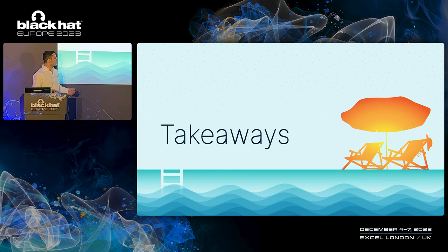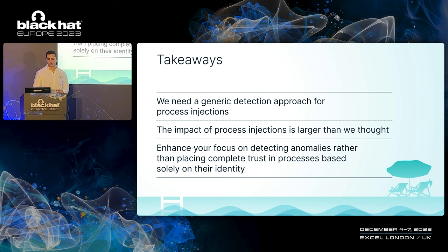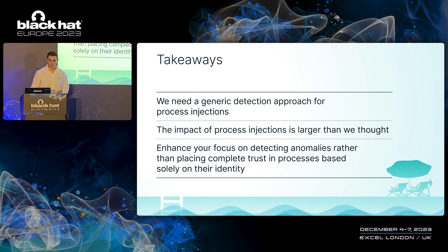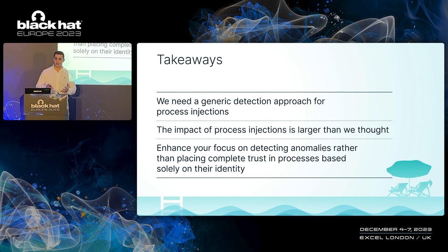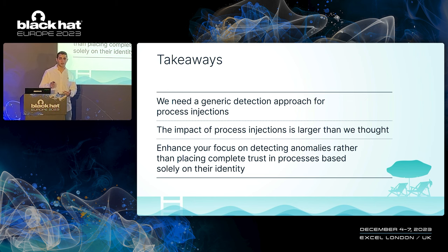So, what are the takeaways for this talk? First, although EDRs have evolved over the years, the current detection approach employed is not strong enough to generically detect new process injection techniques. The thread pool is not the last feature to be abused for process injections, and there is a need for a better and more generic detection approach. In addition, the impact of an undetectable process injection is larger than we thought — it is not only about being stealthy and persistent anymore. Process injection could also be used for undetectable credential dumping and ransomware file encryption, and this is just the tip of the iceberg. Lastly, we need to enhance our focus on detecting anomalies rather than placing complete trust in processes based solely on their identity — executing code on behalf of a trusted process can go undetected, underscoring the importance of analyzing the actions that such processes perform.